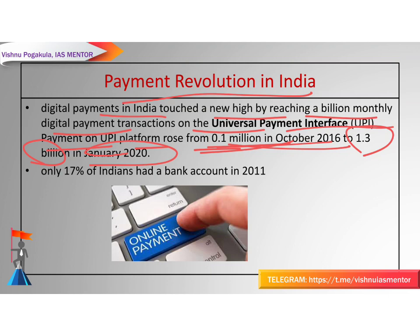India was a financially excluded nation — in 2011, only 17 percent of Indians had a bank account. According to the World Bank, at the pre-2011 speed, it would have taken 50 more years for 80 percent of Indians to get a bank account. But this revolution has taken place. What are the reasons for this kind of payment revolution?